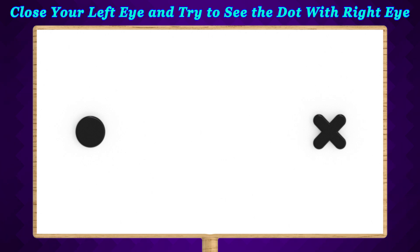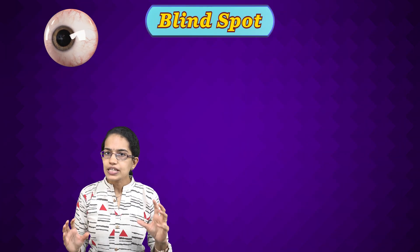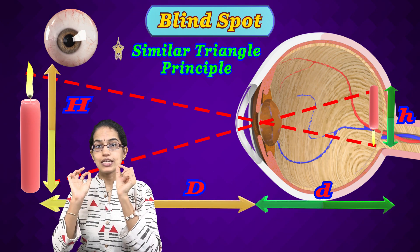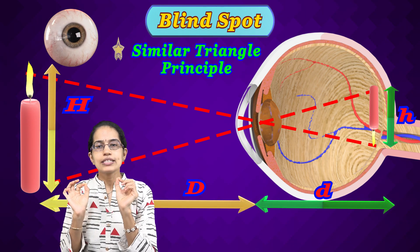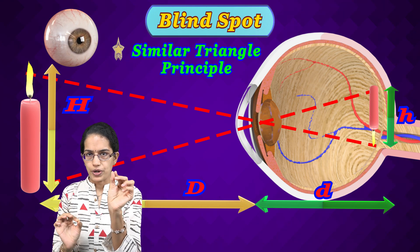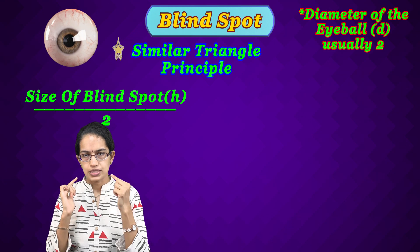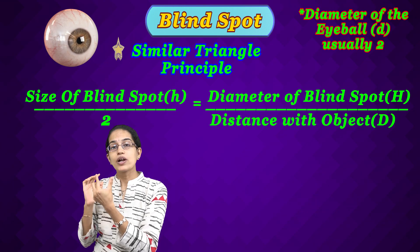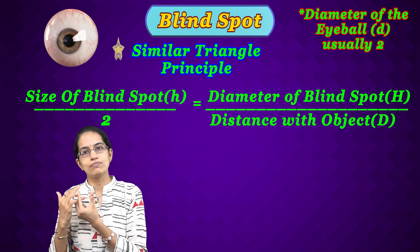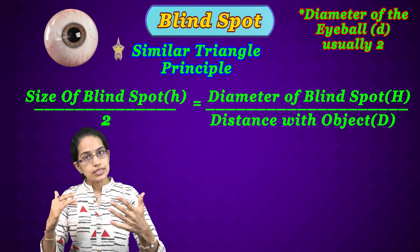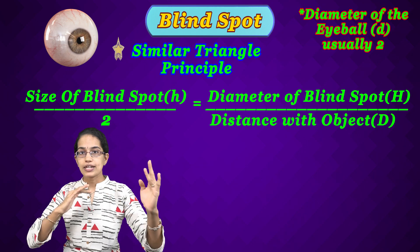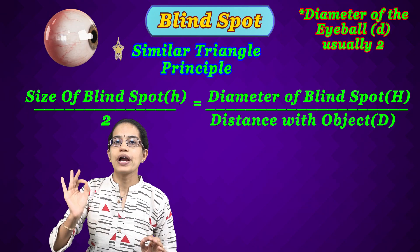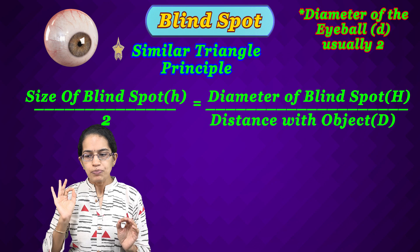To understand the blind spot quantitatively, a simple model based on similar triangles is used: the size of the blind spot divided by 2 equals the diameter of the blind spot divided by the distance to the object. This ratio remains constant and is the principle used to calculate the actual size and location of the blind spot in the eye.